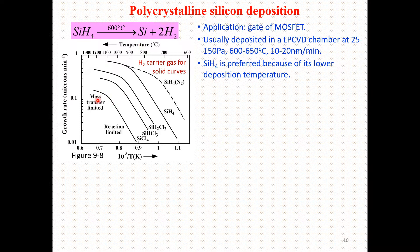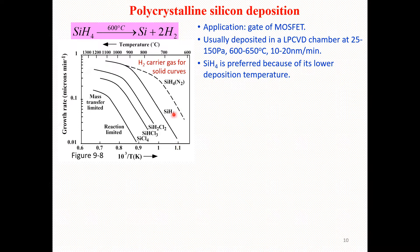Here we have a plot of growth rate as a function of temperature. You can see we have different gases: hydrogen molecules work as a carrier gas for the solid curve, whereas nitrogen is being utilized for silicon tetrahydride as a carrier gas. You can observe that the growth rate is increasing with temperature, and for silicon tetrahydride we utilize nitrogen as carrier gas while for all others we utilize hydrogen.